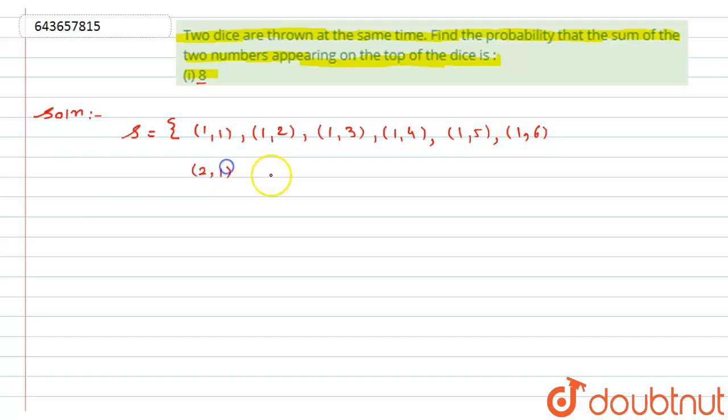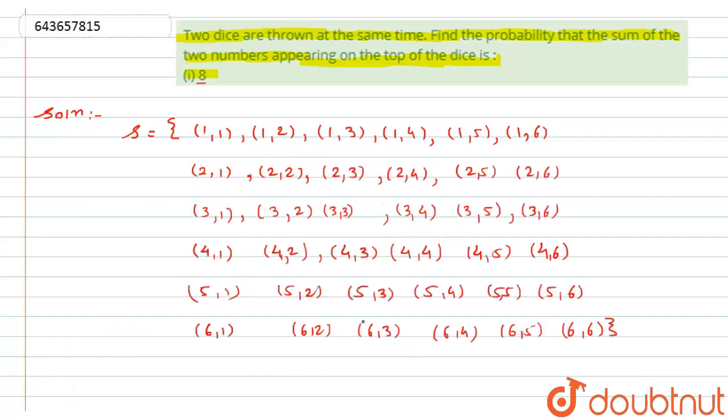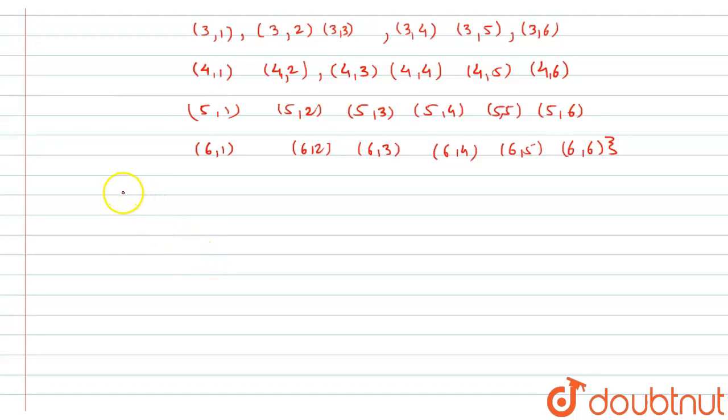here it will be (2,1), then (2,2), and further it goes on up to (6,6). So here I have written all the possibilities. So if I see here, the total number of possible outcomes will be N(S) equals 36.